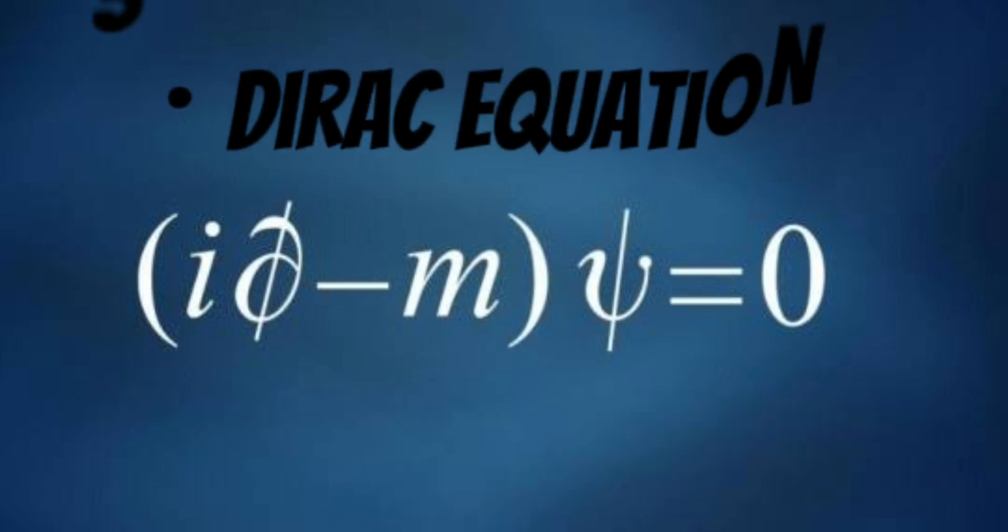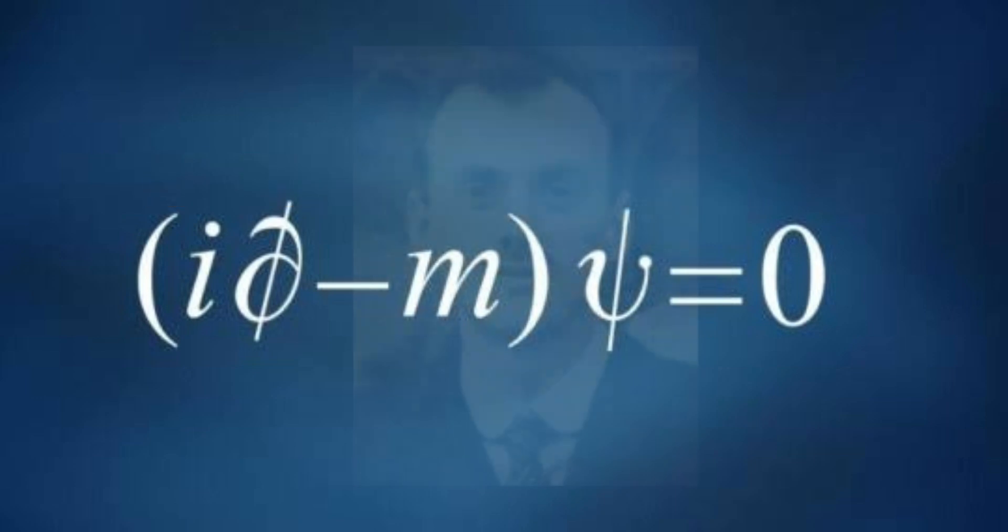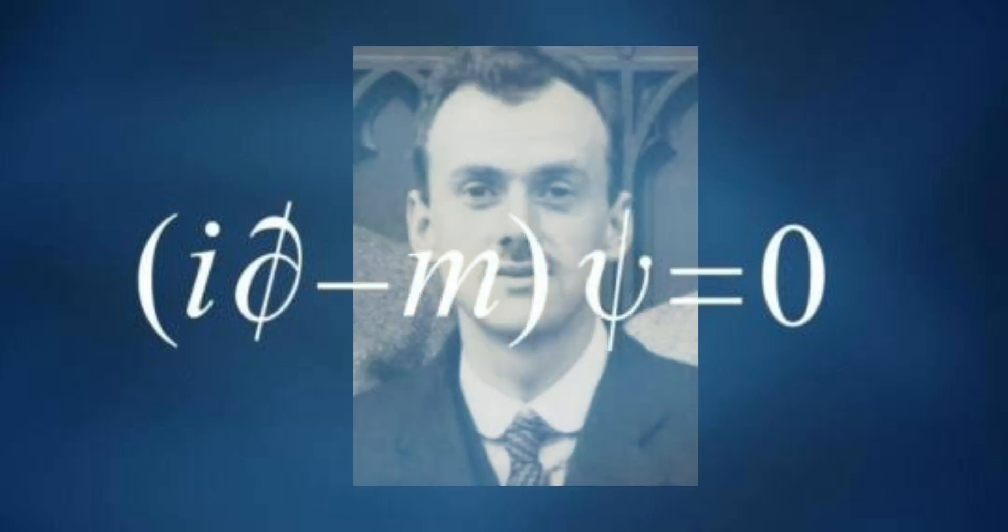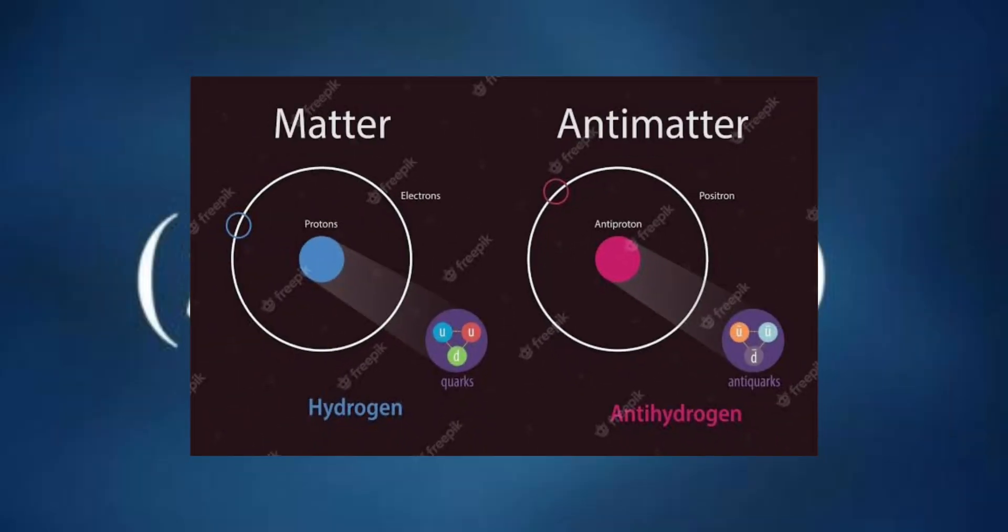Number 3: Dirac equation. One of Dirac's most famous achievements was the formulation of the Dirac equation in 1928. This equation describes the behavior of relativistic electrons and predicted the existence of antimatter, a concept that was experimentally confirmed later.